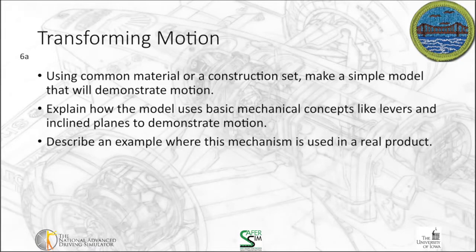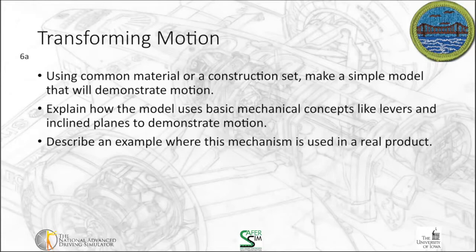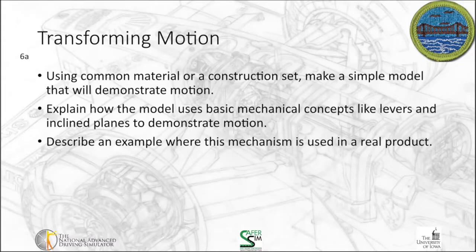The first option, 6A, is transforming motion. Using common materials or a construction set, make a simple model that will demonstrate motion. Explain how the model uses basic mechanical concepts like levers and inclined planes to demonstrate motion, and then describe an example where this mechanism is used in a real product. You get to use your imagination and transform motion, whether that's through rotation or through levers. So use a little bit of imagination and use a construction set to dig into this one.